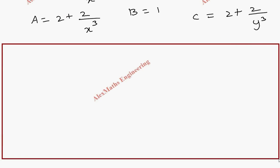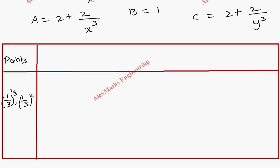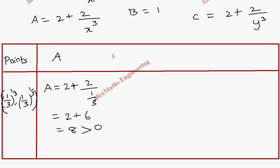We form a table with the stationary point. At the point ((1/3)^(1/3), (1/3)^(1/3)), we evaluate A: substituting x³ = 1/3 gives A = 2 + 2/(1/3) = 2 + 6 = 8, which is greater than 0.